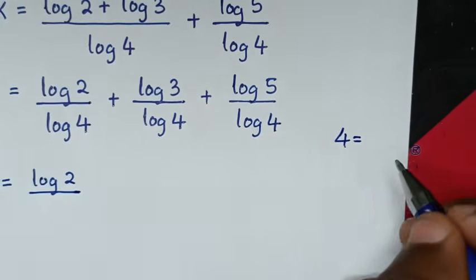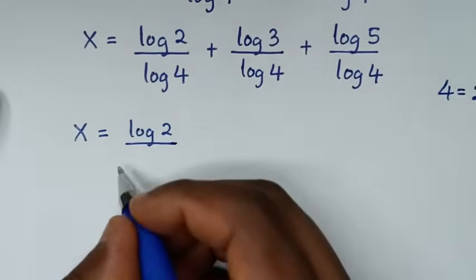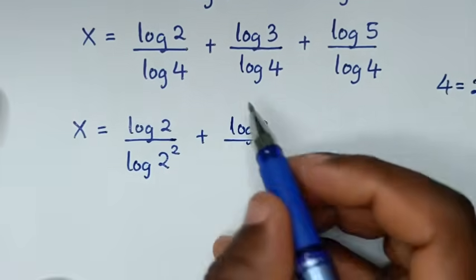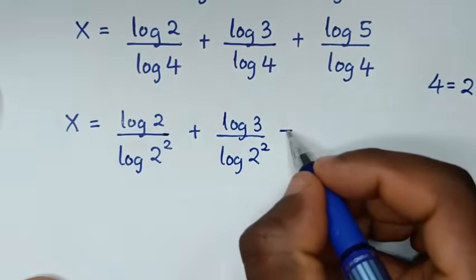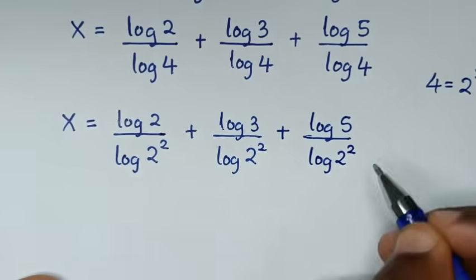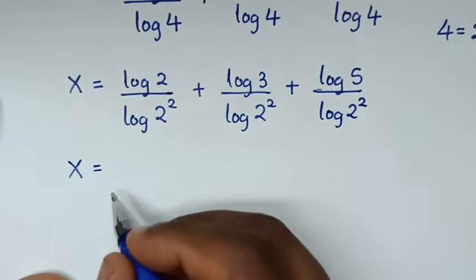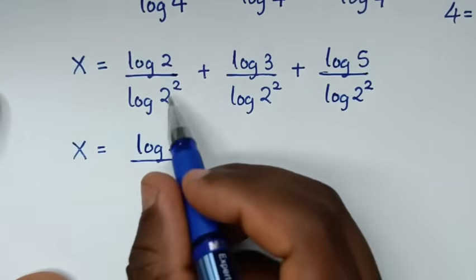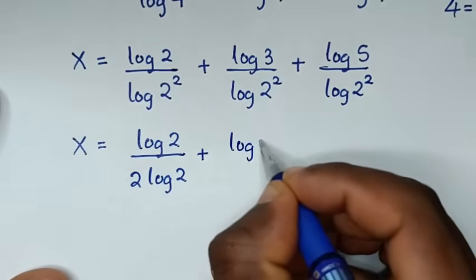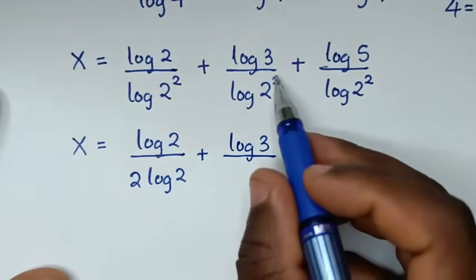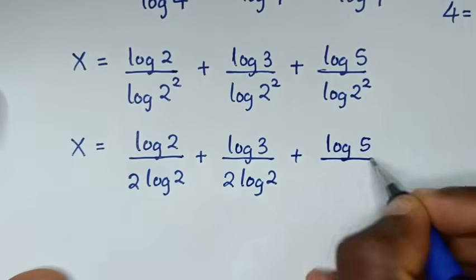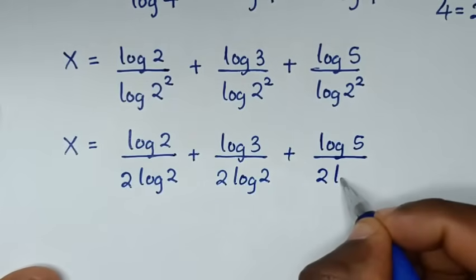Now, 4 is equal to 2 squared, so we substitute log of 4 with log of 2 squared. Applying the power rule, log of 2 squared becomes 2 log of 2. So it will be: log of 2 over 2 log of 2, plus log of 3 over 2 log of 2, plus log of 5 over 2 log of 2.